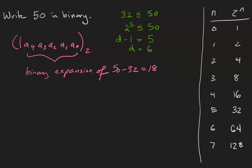So let's find out what the binary expansion of 18 is. The highest power of 2 that divides 18 is 16. So the binary expansion of 18 is going to be 1, then a 3, a 2, a 1, a 0. So what that tells me is that my binary expansion of 50 is 1, 1, a 3, a 2, a 1, a 0, sub 2.